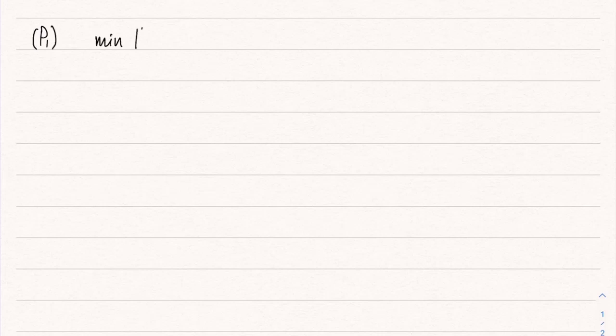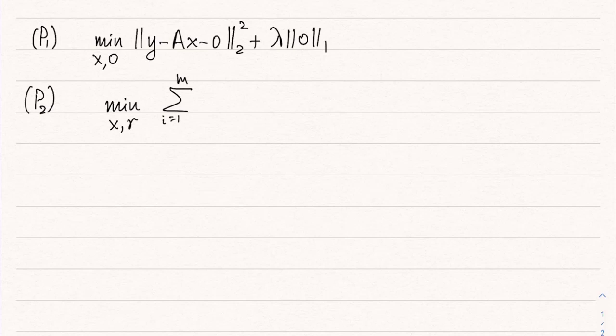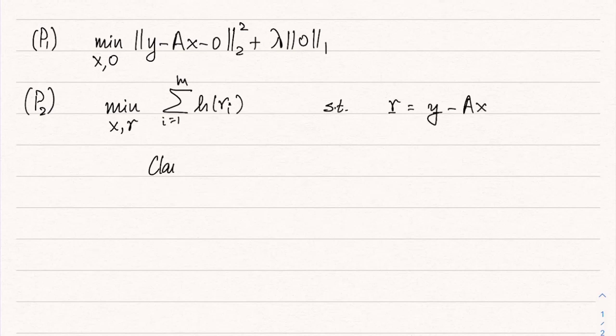We have seen the lasso-like formulation which is P1, which involves minimizing the residuals after removing the outliers as well as the L1 norm of the outliers. And we have seen the Huber estimation problem which involves minimizing the Huber penalty on the residuals. The claim is that these formulations P1 and P2 are actually equivalent.